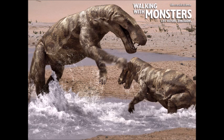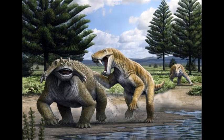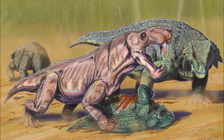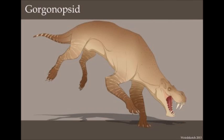Delving further into the therapsids, we encounter the Gorgonopsians, synapsids popular for being diverse carnivores existing from the Middle to Late Permian. Gorgonopsians are important to the evolutionary history of mammals because they may display the first signs of fur, which is why they're grouped with mammals into a single clade called Theriodontia. Like all the other therapsids, they were originally identified as mammal-like reptiles, but due to their similarities with mammals, they might as well be classified as stem mammals.